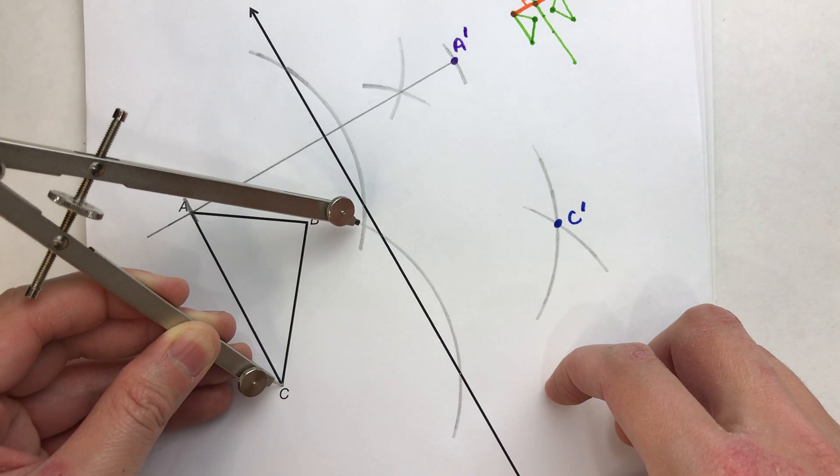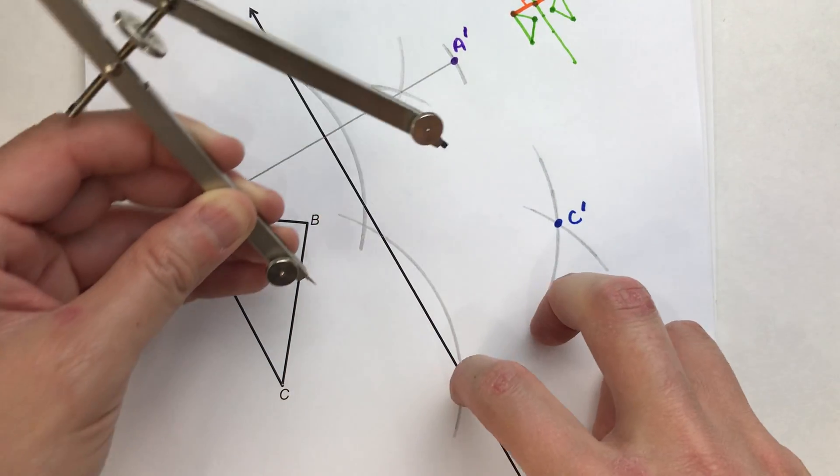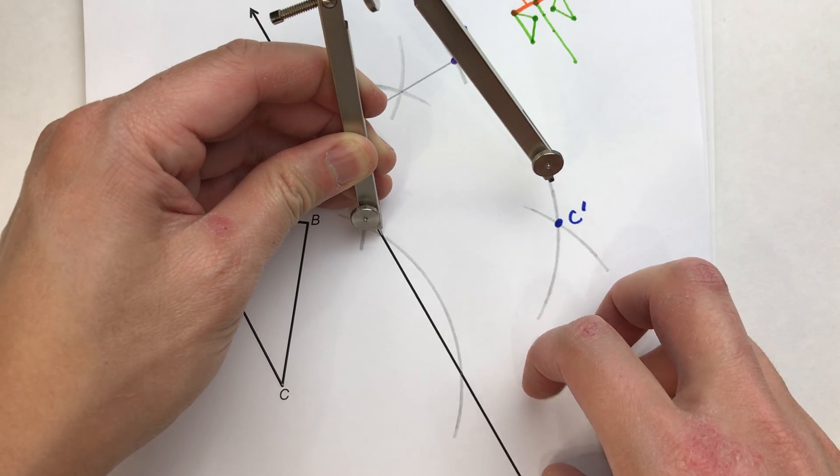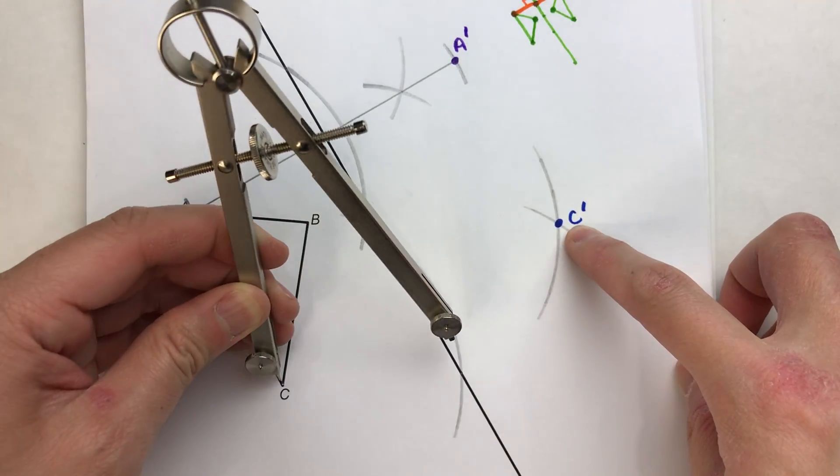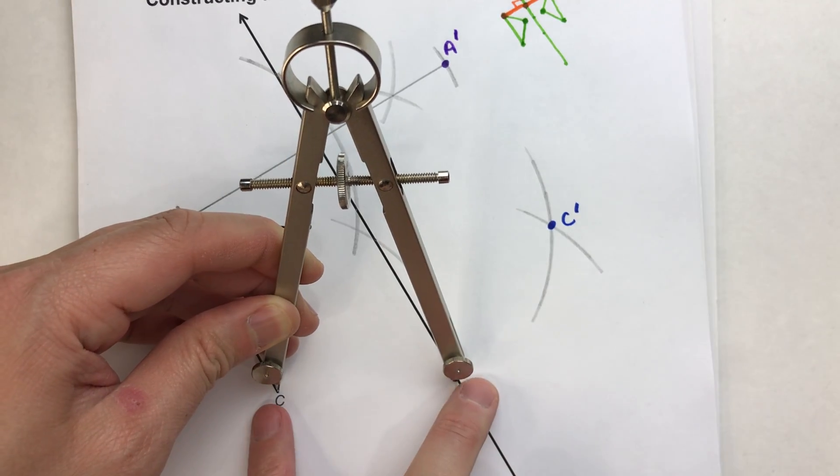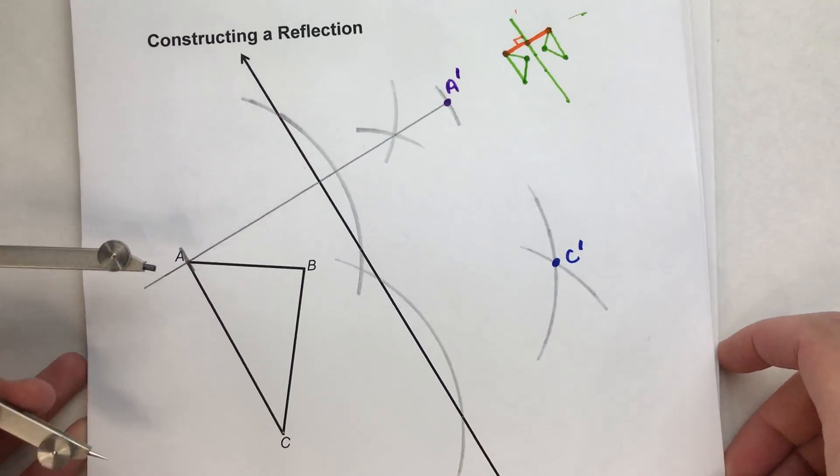You see? So notice how C is the same distance from here to here as it is from here to here. And that's what we want. Same with right here. From here to here is the same distance from here to here.